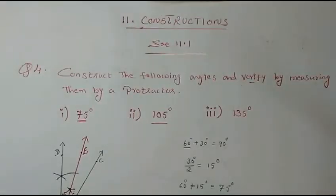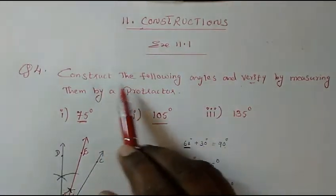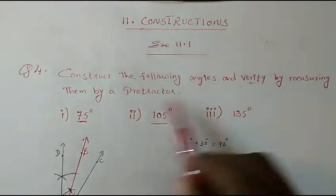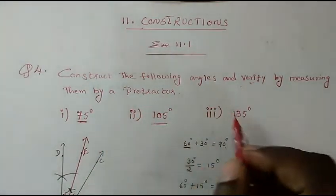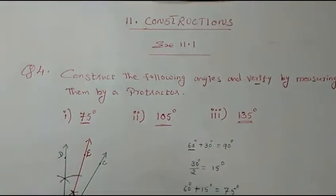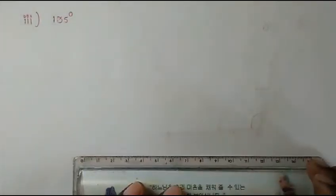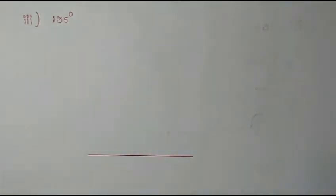Hi everyone, welcome to Mash Mat. Today we are going to study Chapter 11 Constructions, Exercise 11.1 Question 4 — construct the following angles and verify by measuring them with a protractor. In this video we will see how to construct a 135 degree angle.